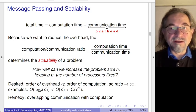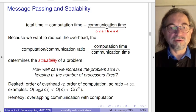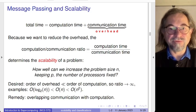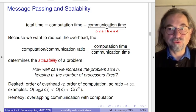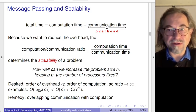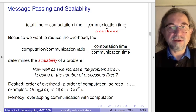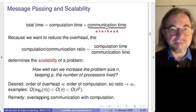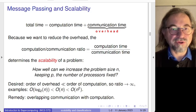Scalability in general defines the suitability of a problem to run on multiple processors. One needs a reasonable problem size — there is a lower bound — but also an upper bound: if the problem starts to grow too large, the communication overhead may dominate and make it no longer suitable for parallel execution.